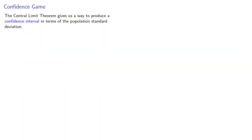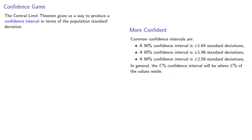The central limit theorem gives us a way to produce a confidence interval in terms of the population standard deviation. And we saw earlier that we have three common confidence intervals.